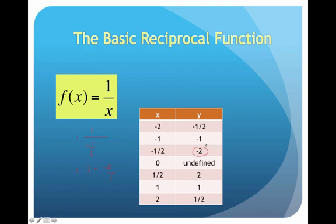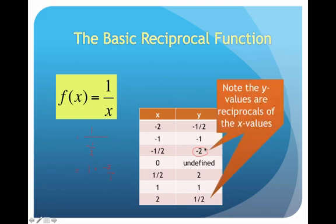When I go to plug in 0 — I can't. The mathematical world as we know it blows up, otherwise known as undefined. So I can't plug in 0, and then I can continue to plug in some positive values. Why is it called the reciprocal function? Just note that the y values are reciprocals of the x values — whatever I plug in for x, the reciprocal is going to be my range value.